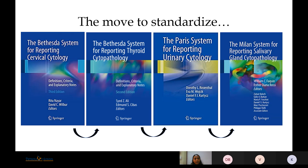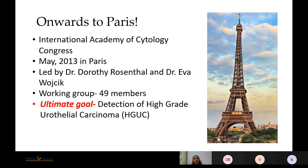The move to standardization began with the Bethesda System for reporting of cervical cytology, initiated in 1988. Then there was standardized reporting for thyroid, the Bethesda System, which came into force since 2017. Similarly, for salivary gland neoplasms we have the Milan System, and we have the Paris System for urinary cytology.